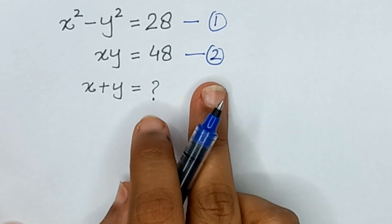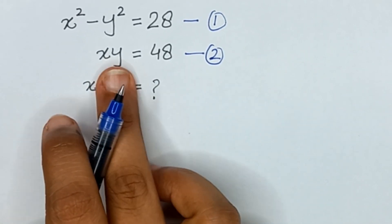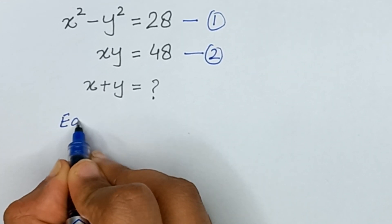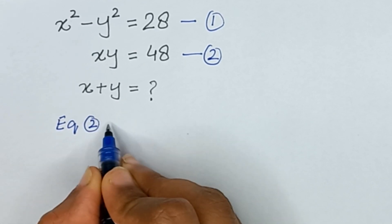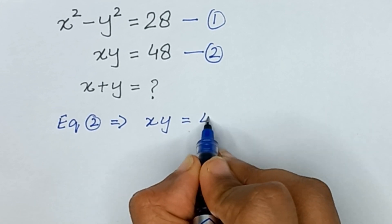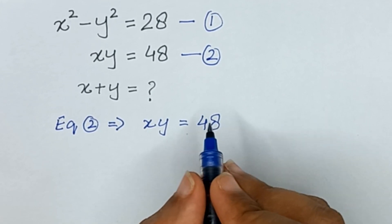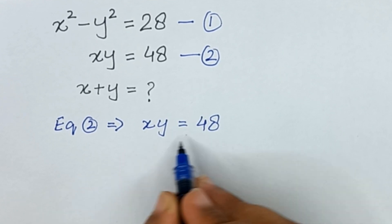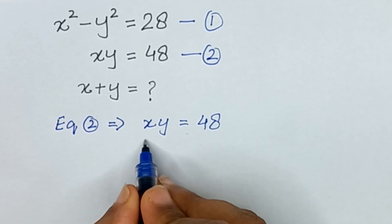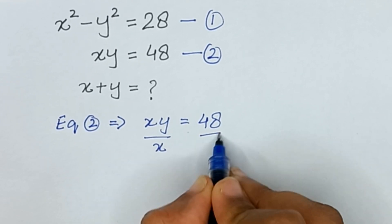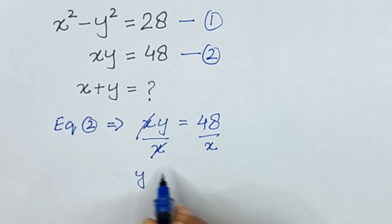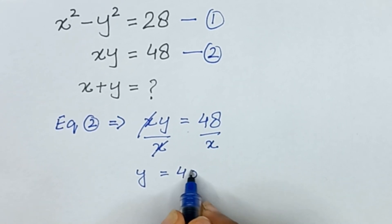In the first step we will use the second equation, which is xy equals 48. If we divide both sides by x, then x cancels out and we get y equals 48 divided by x.